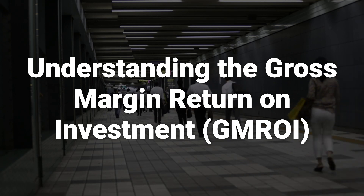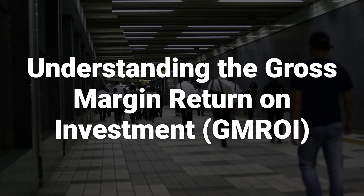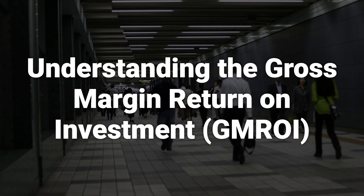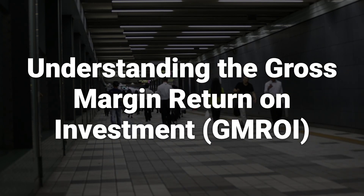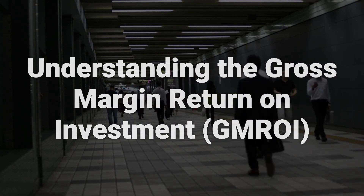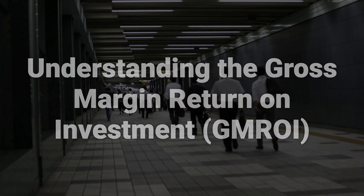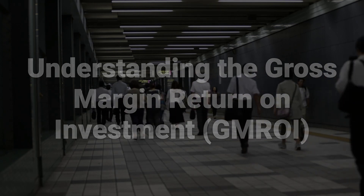The opposite is true for a ratio below 1. Some sources recommend the rule of thumb for GMROI in a retail store to be 3.2 or higher, so that all occupancy and employee costs and profits are covered.